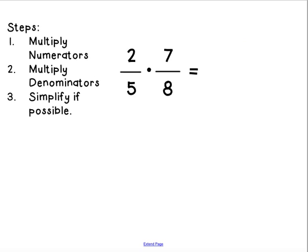Second example, we have 2 fifths times 7 eighths. So, again, multiply our numerators. 2 times 7 is 14. Multiply our denominators. 5 times 8 is 40.